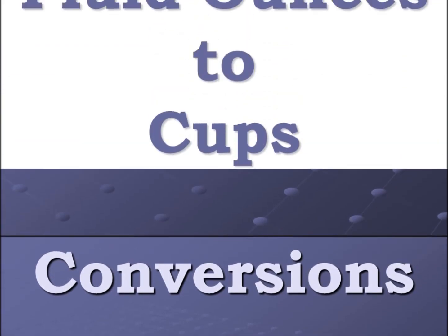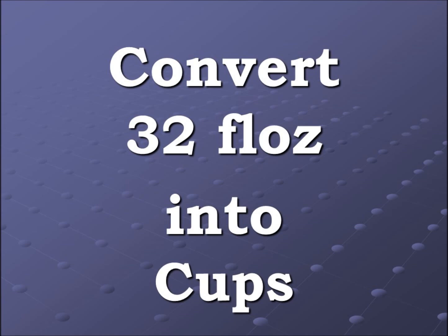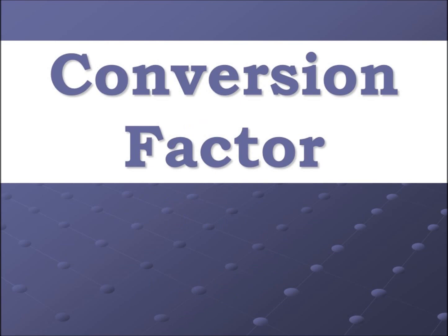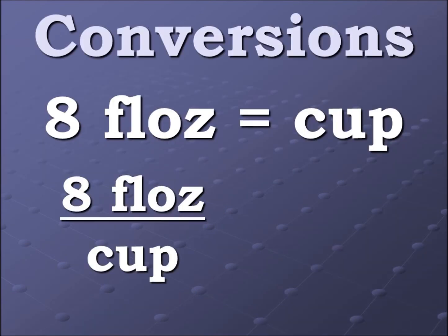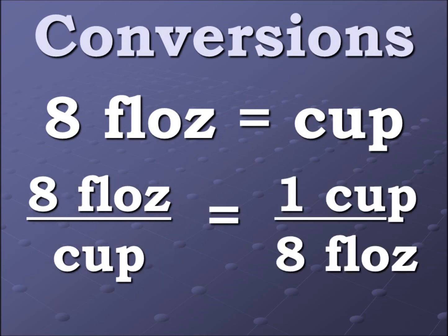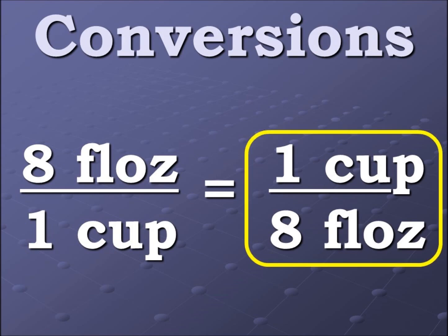Now let's convert fluid ounces back into cups. We have 32 fluid ounces — that converts into how many cups? Again, our conversion factor: eight fluid ounces equals one cup. We put that into a ratio, and this time we make it equal to its inverse: one cup over eight fluid ounces. We use that form because what we're converting to is cups, so we need cups on top.